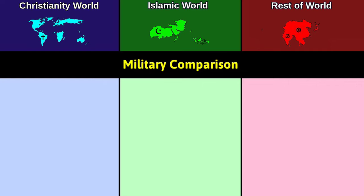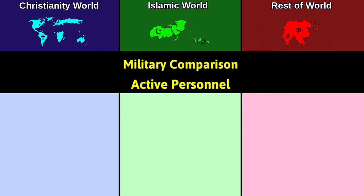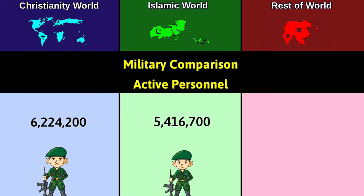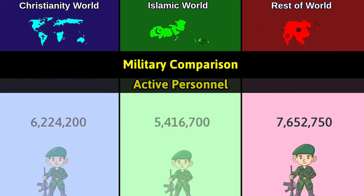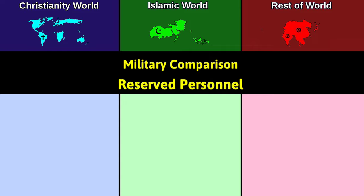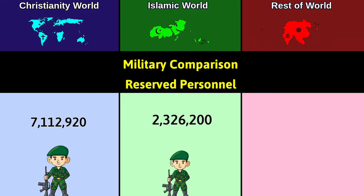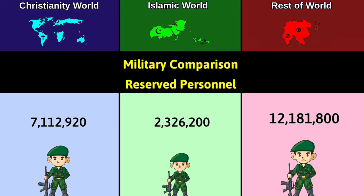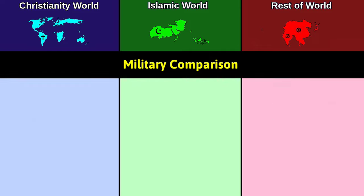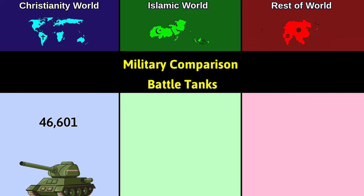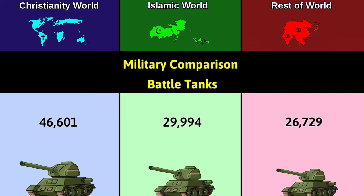Military comparison. Active personnel: Christianity 6.2 million; Islam 5.4 million; Rest 7.6 million. Reserve personnel: Christianity 7.1 million; Islam 2.3 million; Rest 12.18 million. Battle tanks: Christianity 46,601; Islam approximately 30,000; Rest 26,729.